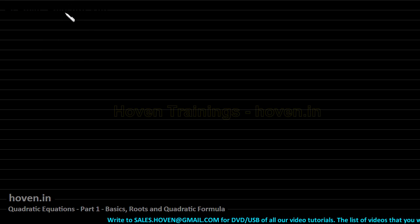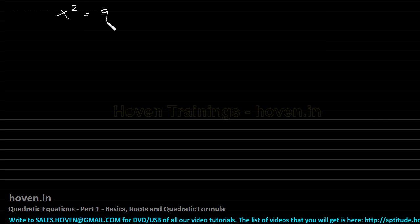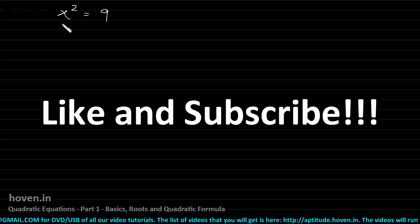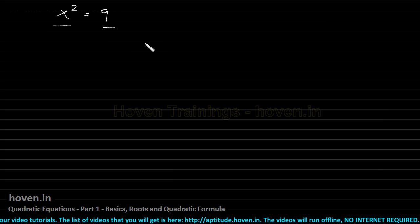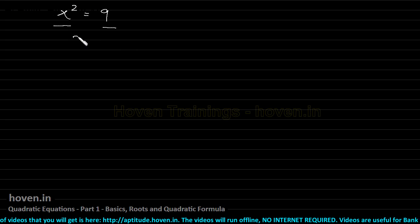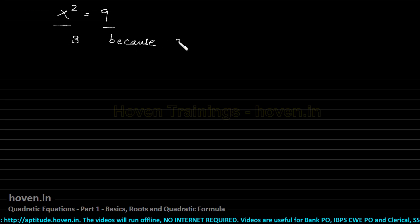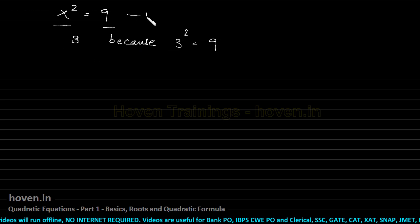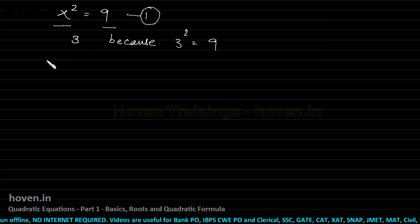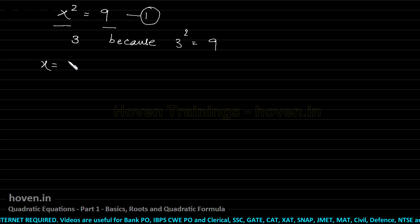Let us start from a very basic level. Suppose somebody has written an expression like x² = 9. For what values of x is the left-hand side equal to the right-hand side? One value that immediately comes to mind is 3, because 3² = 9. So we can say equation 1 is satisfied for x = 3.